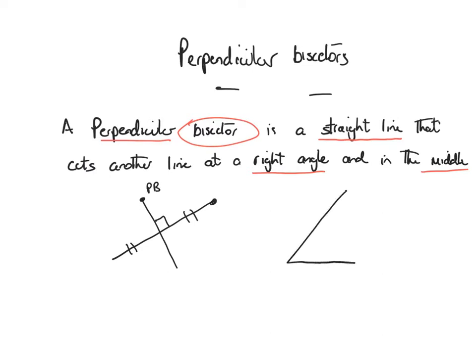Any triangle has got three perpendicular bisectors. There's a perpendicular bisector of each side — it cuts it in the middle and at a right angle. So each triangle has got a perpendicular bisector on each side. Remember that a perpendicular bisector is a straight line that cuts another straight line at a right angle and also cuts it in the middle.